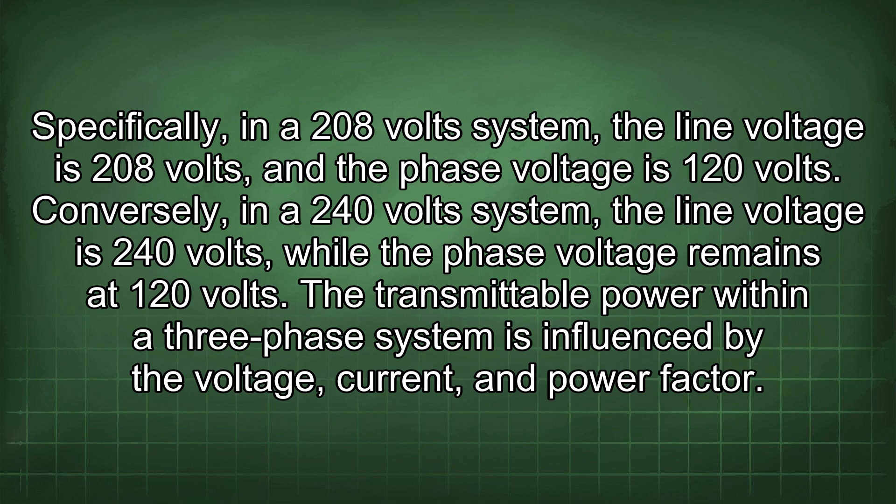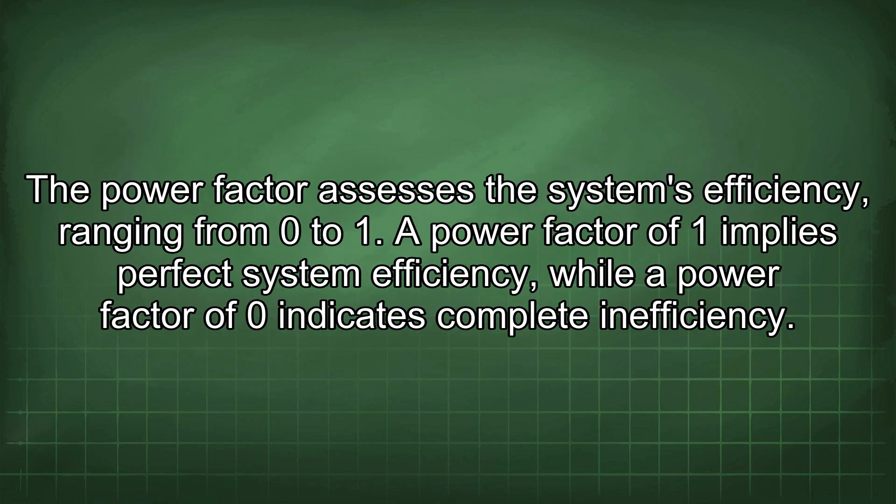Conversely, in a 240-volt system, the line voltage is 240 volts while the phase voltage remains at 120 volts. The transmittable power within a three-phase system is influenced by the voltage, current, and power factor. The power factor assesses the system's efficiency, ranging from zero to one.